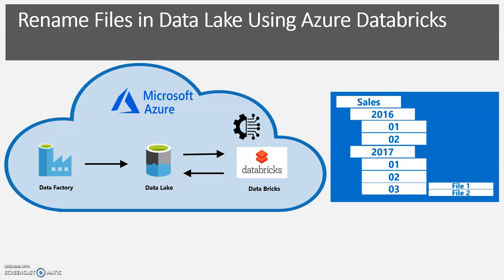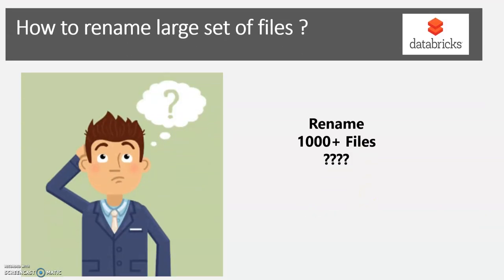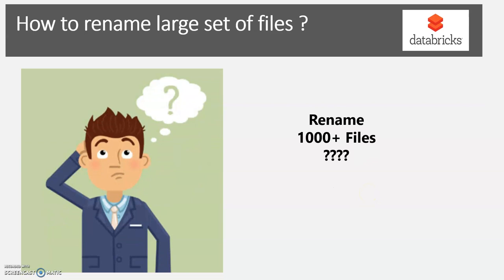If it's one or two files, you can just move or rename them manually and fix it. But if you have a large set of files — say a thousand-plus files — you can't do it manually. You have to set up an automated operation. What I did is set up a data fix operation to rename those files. Let's see how to do it.